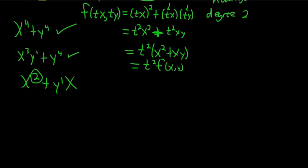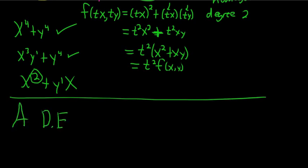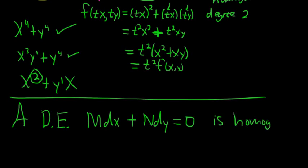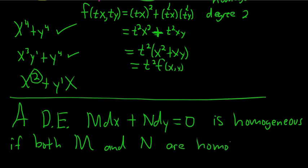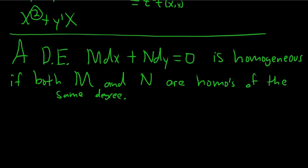So a DE is homogeneous if each piece is homogeneous of the same degree. So a DE of the form Mdx plus Ndy equals 0 is homogeneous if both M and N are homogeneous of the same degree.